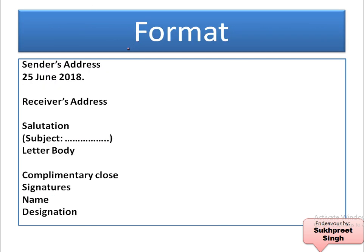Now, the format of a letter to the editor. First comes sender's address and date. Then we leave a line and write the receiver's address. Then again a line is left, followed by salutation and subject. If subject is written after salutation, it should be enclosed in brackets. It can be written before salutation also — there you don't need to enclose it in brackets. Then leave a line, then the body of the letter, then another line, and then complimentary close, your signature, name, and designation.